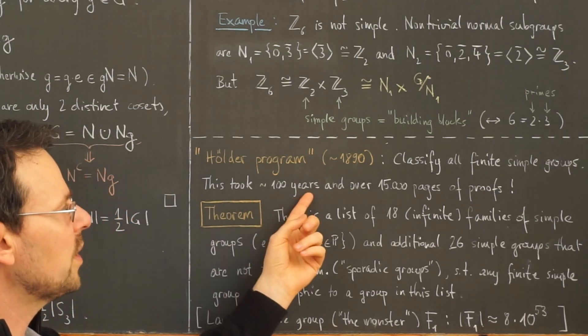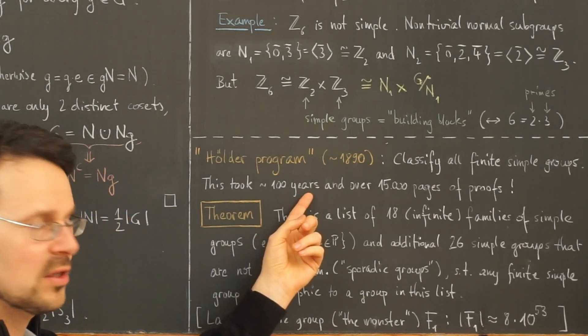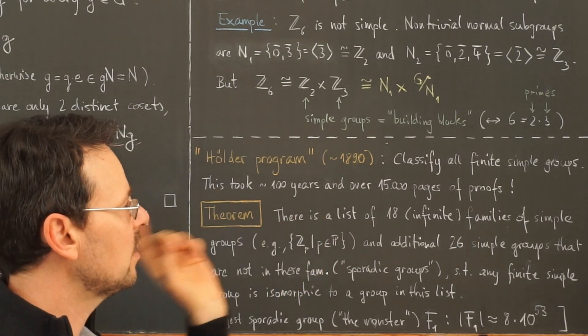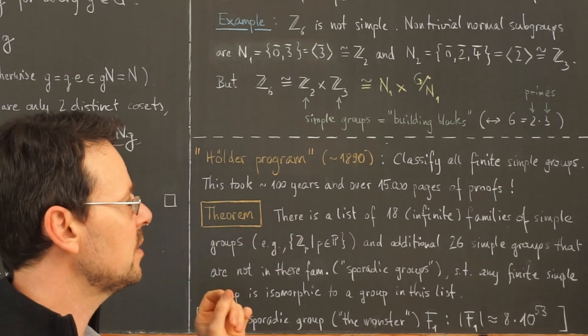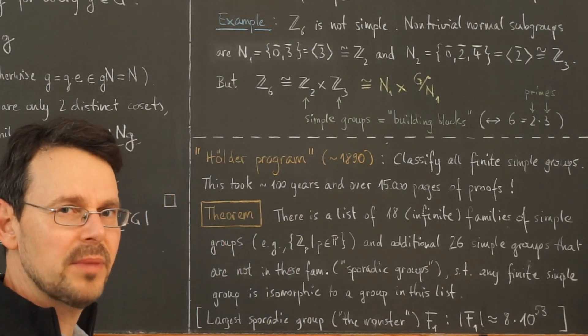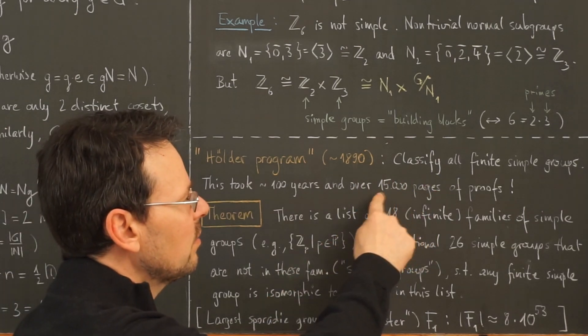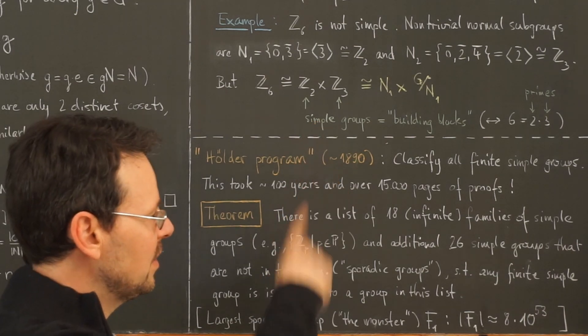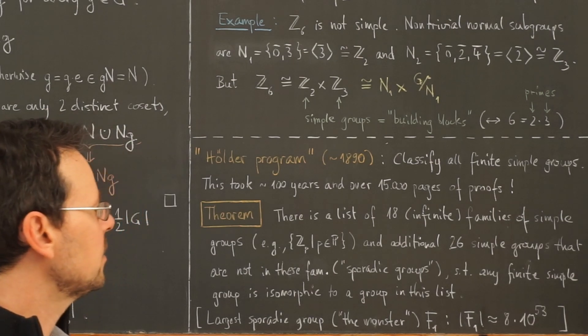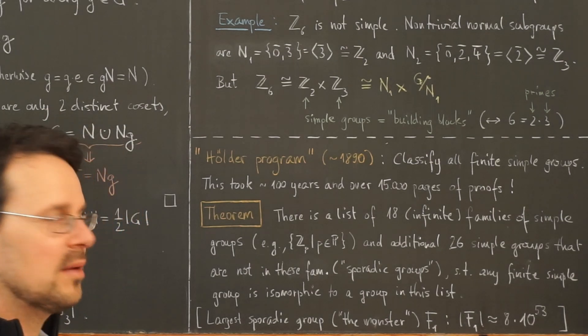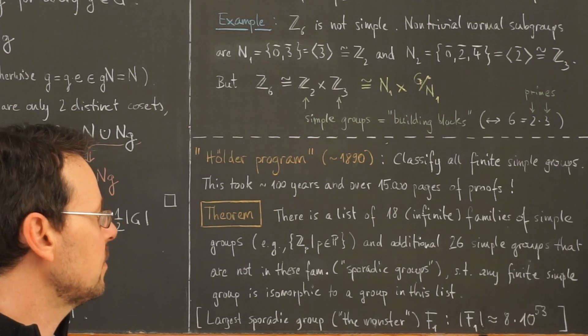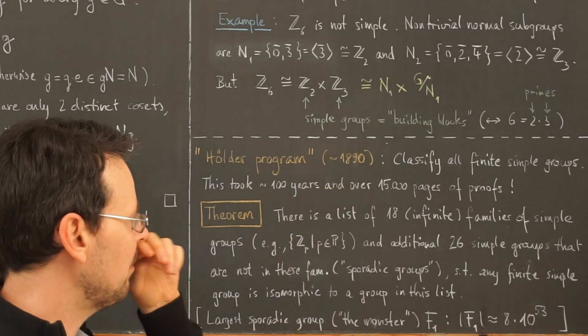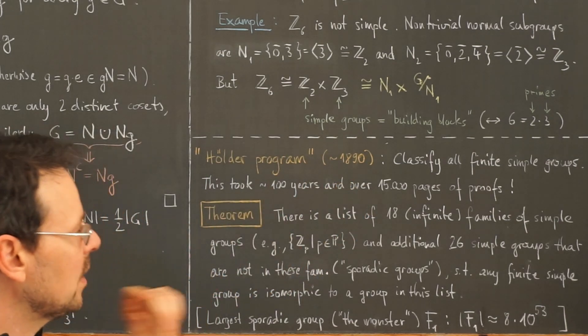It took almost 100 years, actually a bit longer after all the gaps in the proofs were filled. And over 100 mathematicians worked on this. There were around 500 papers that were published and all in all around 15,000 pages of proofs of this classification theorem, sometimes called the fundamental theorem of finite group theory, or also the enormous theorem for obvious reasons.